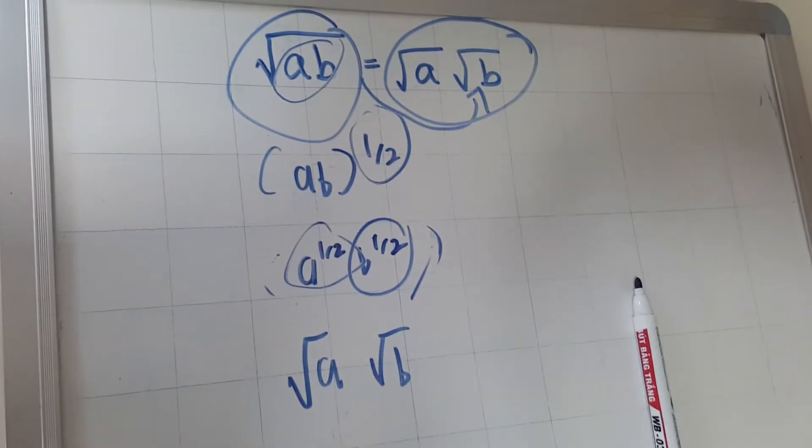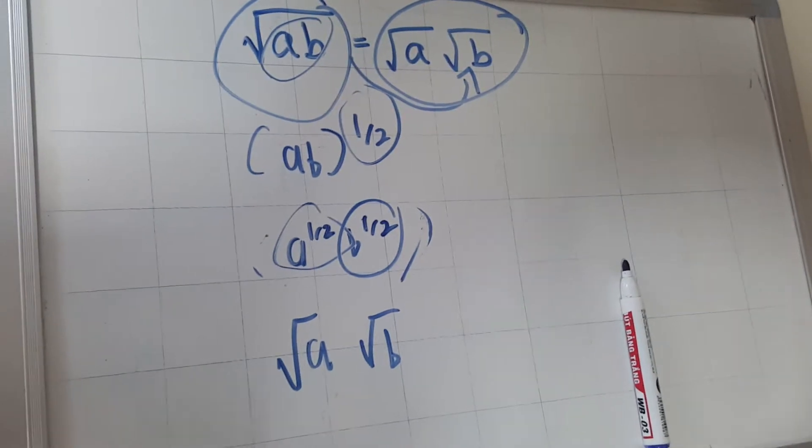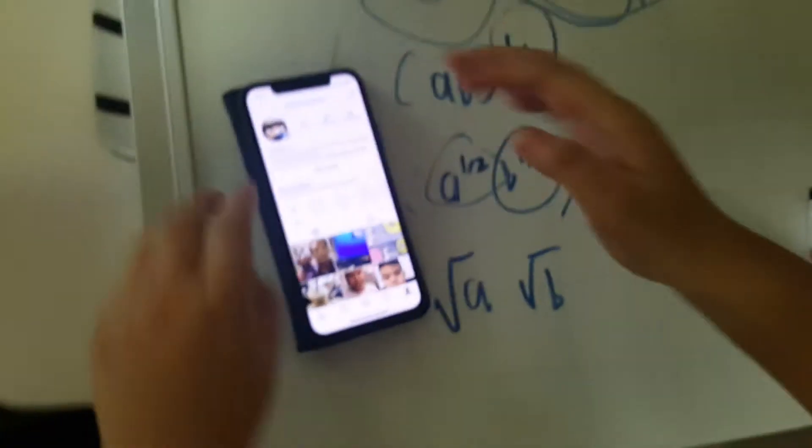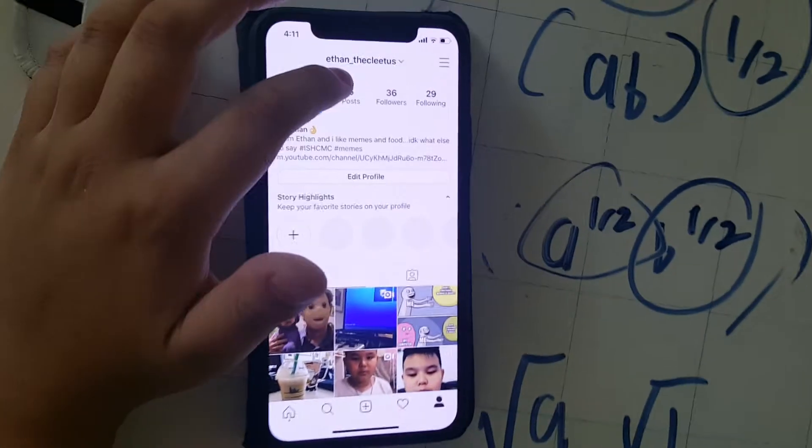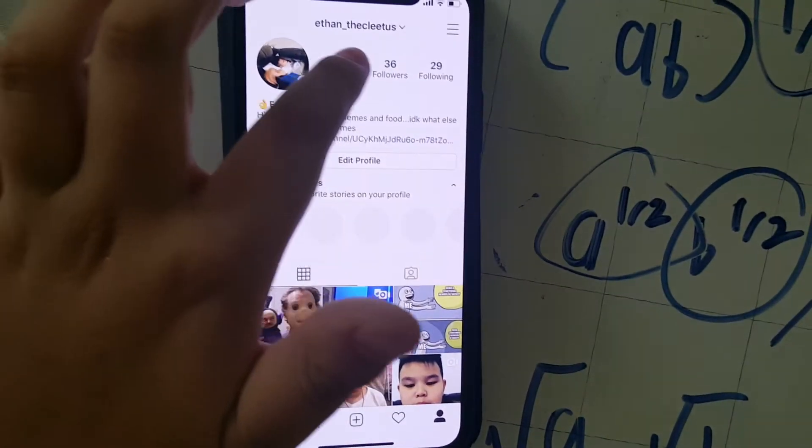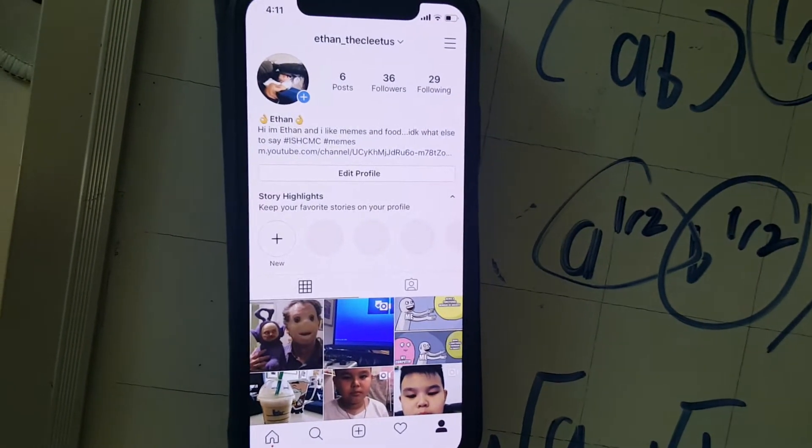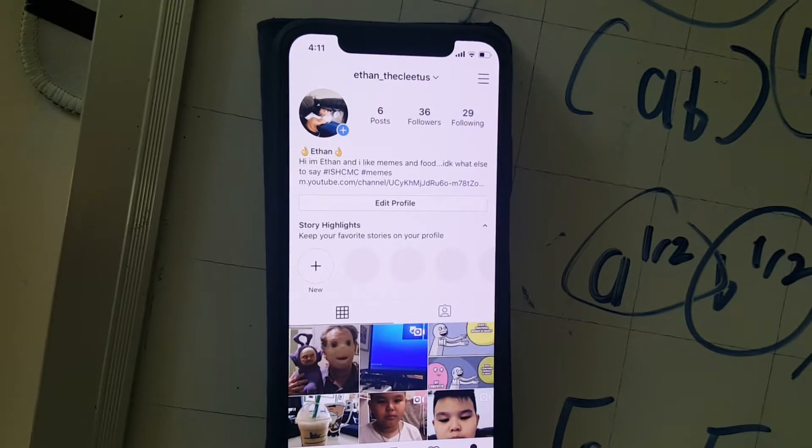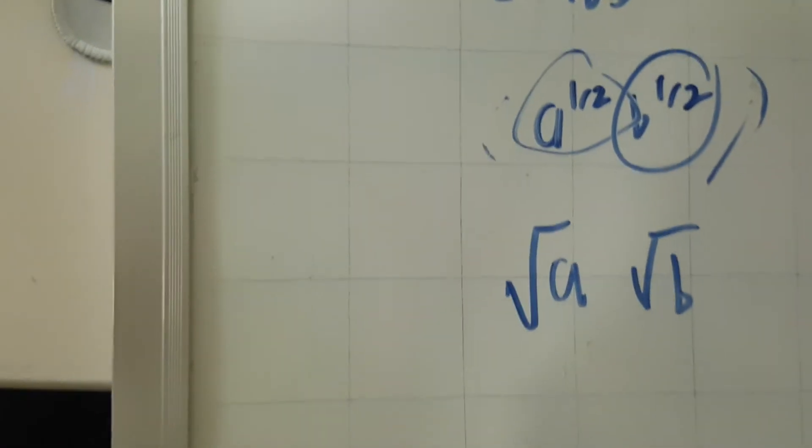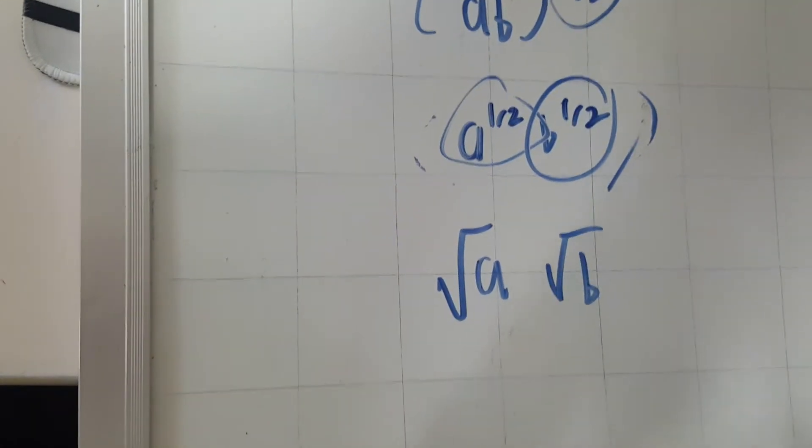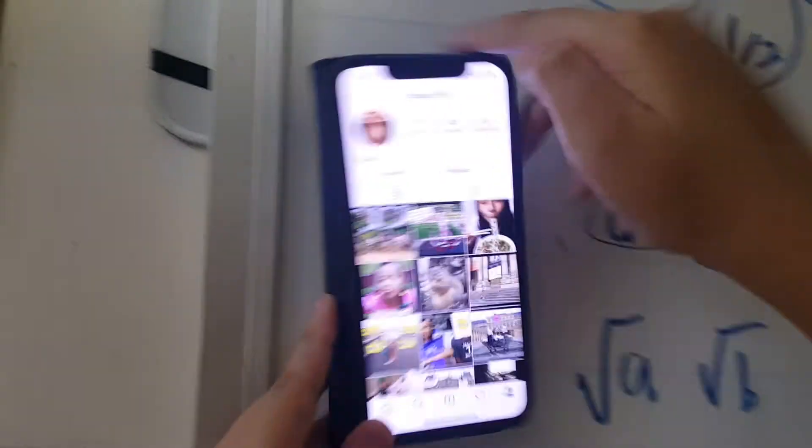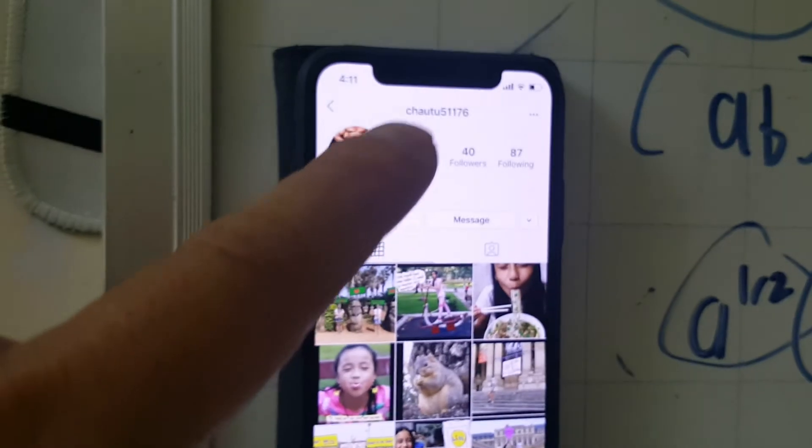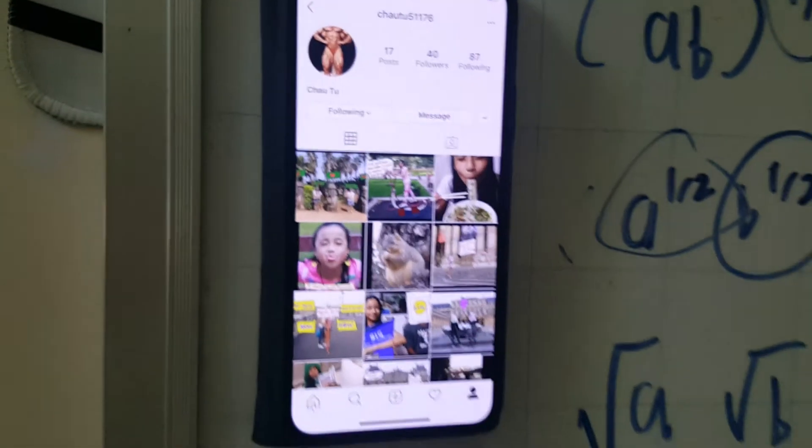So you want to make a plug for your Instagram account? Sure. So here, guys, put it on the board. Follow me at Ethan underscore the Cletus. All capital, all lowercase. And are you going to give a shout out to me on my Instagram account? And also make sure to follow the runner of this channel, Chow Mr. Chow at Chow251176.